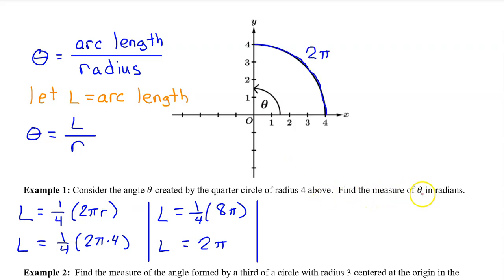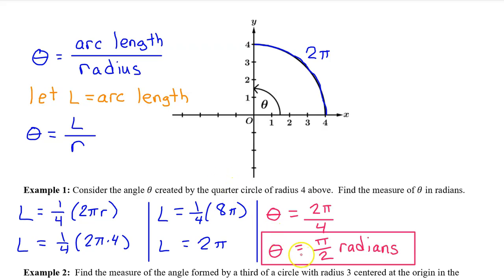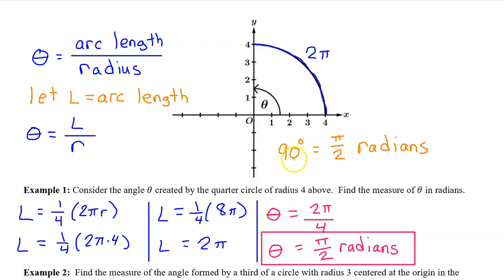Our goal is to find the measure of theta in radians. Theta equals l over r, which is 2π over 4, reducing to π over 2. So theta equals π/2 radians. This is a really common angle in trigonometry, so memorize this: what we used to think of as 90 degrees in geometry class, we will now think of as π/2 radians.